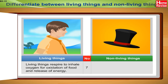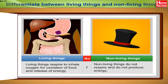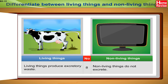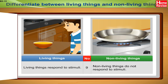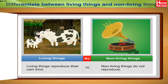7. Living things respire to inhale oxygen for oxidation of food and release of energy, while non-living things do not respire and do not produce energy. 8. Living things produce excretory waste; non-living things do not excrete. 9. Living things respond to stimuli. 10. Living things reproduce their own kind, while non-living things do not reproduce.